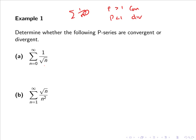Consider the first example here, the sum from 0 to infinity of 1 over root n. Now root n is simply n to the power of a half.